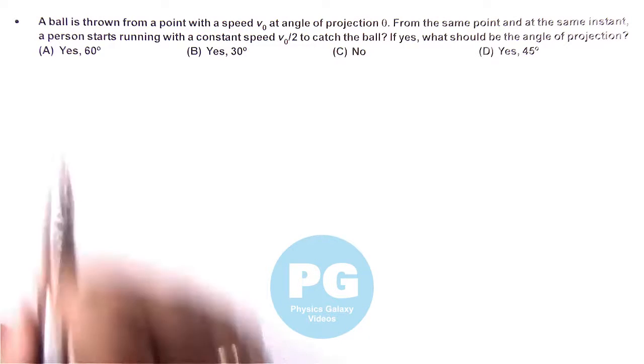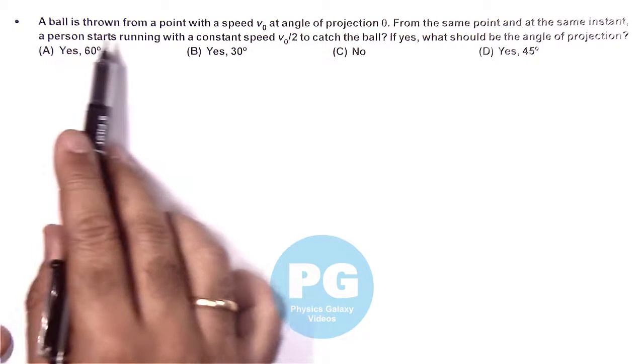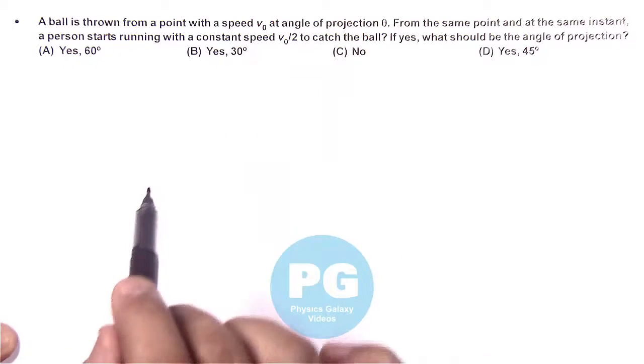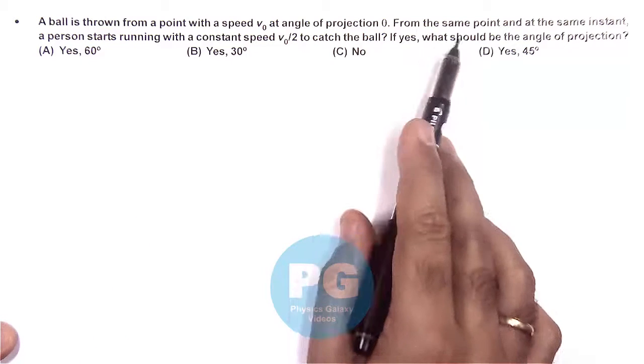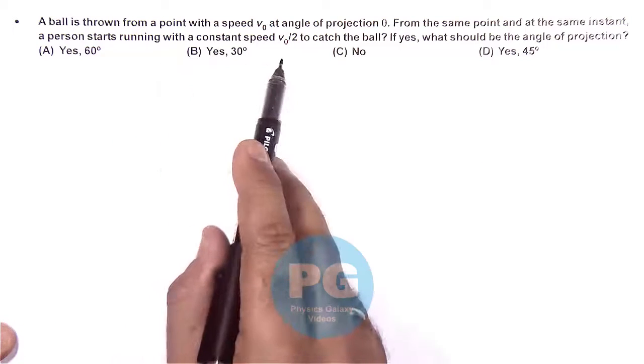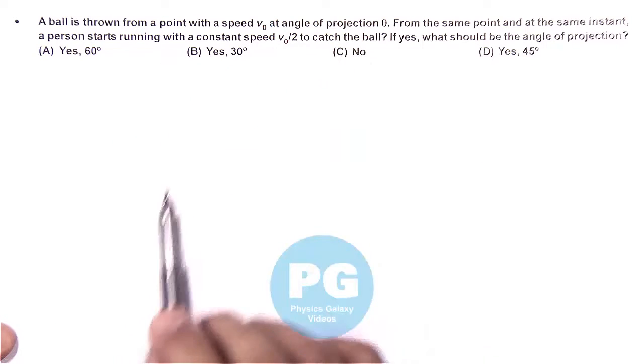In this question, we are given that a ball is thrown from a point with a speed V-naught at an angle of projection theta. From the same point at the same instant, a person starts running with a constant speed V-naught by 2 to catch the ball.